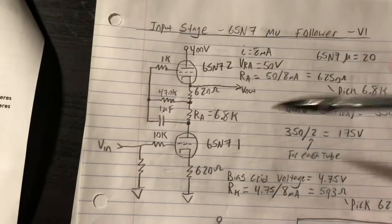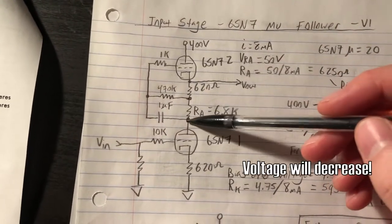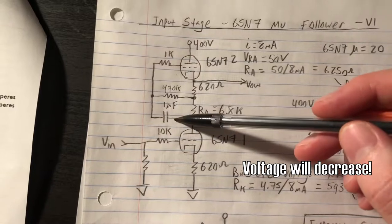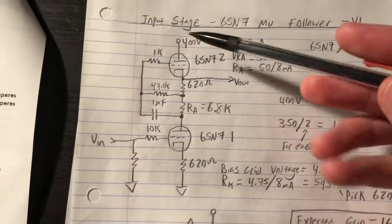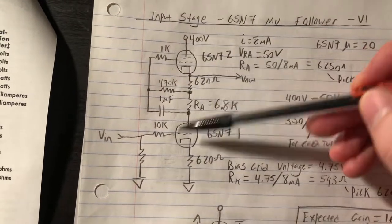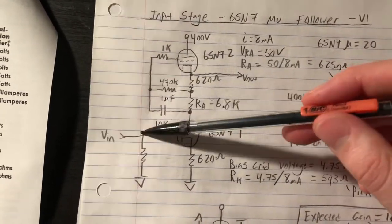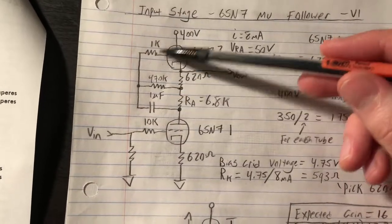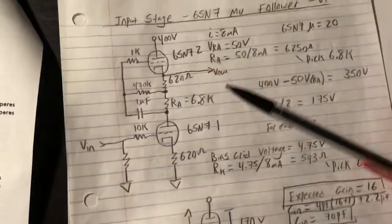The voltage on the plate of this bottom tube is going to increase. Therefore, the grid through this coupling capacitor is going to see that signal, and it's going to decrease its conduction. A positive signal on V in increases this tube's conduction, and this top tube decreases its conduction, so they're actually working in tandem.